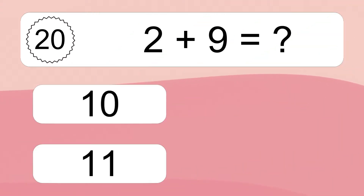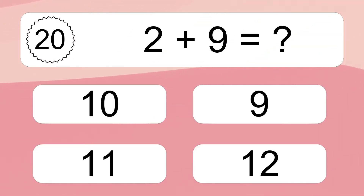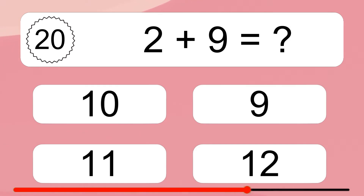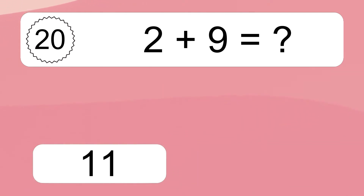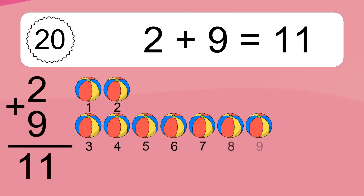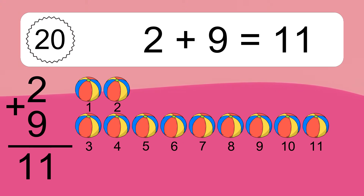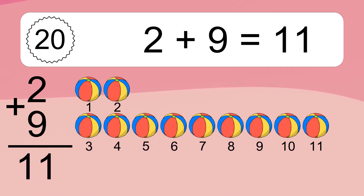2 plus 9 equals what? 2 plus 9 equals 11. Let's count it. 1, 2, 3, 4, 5, 6, 7, 8, 9, 10, 11.